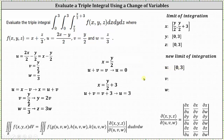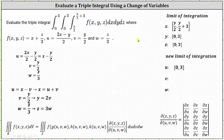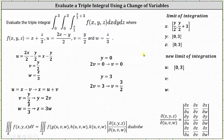Now we'll find the limits of integration for v using the limits of integration for y. When y equals zero and y equals two v, we get two v equals zero, so v equals zero. The upper limit for y is y equals three; replacing y with two v and solving gives v equals three halves. So the interval of integration for v is from zero to three halves.